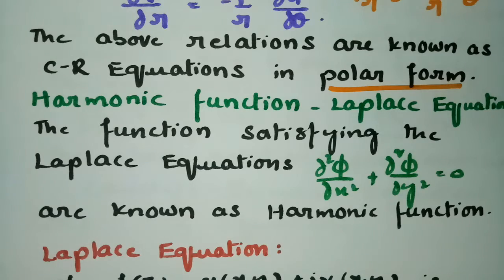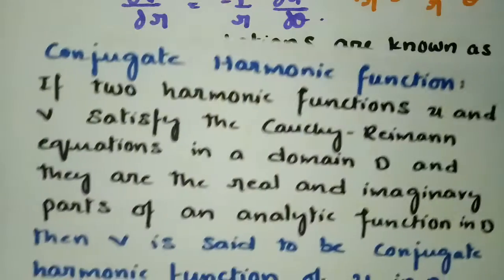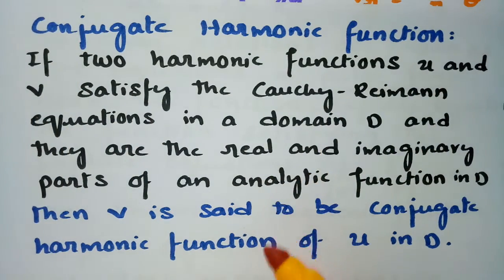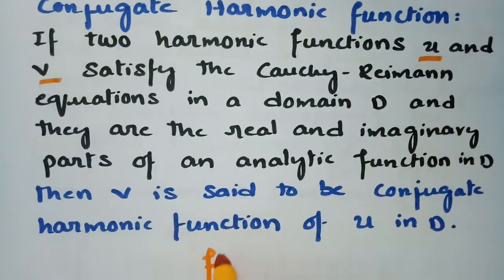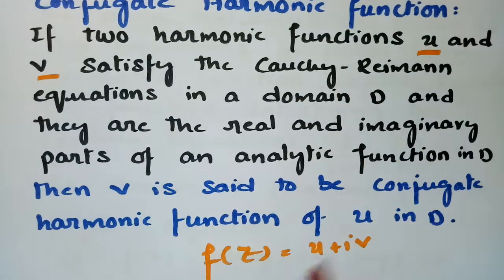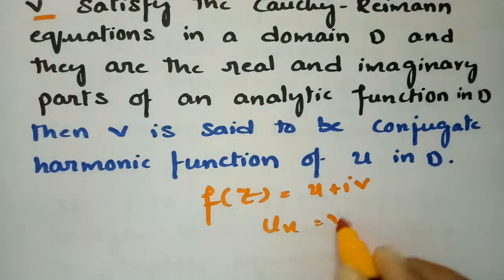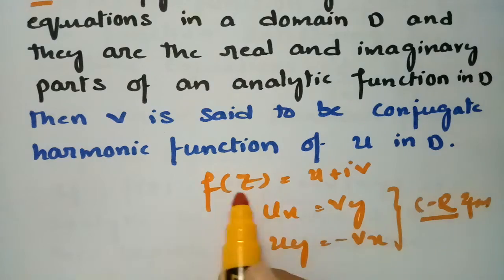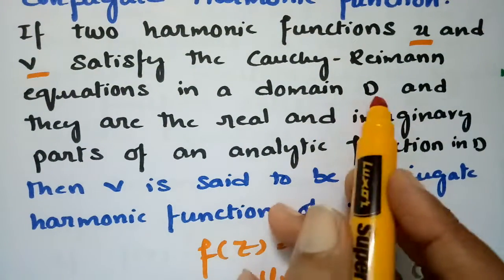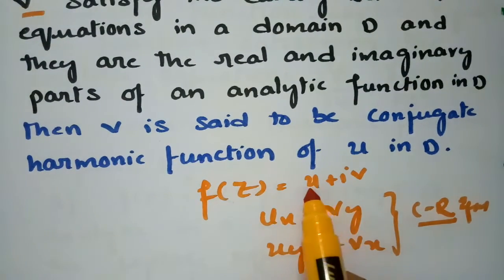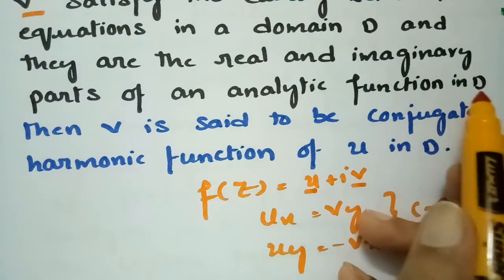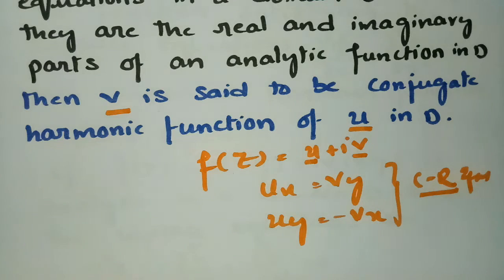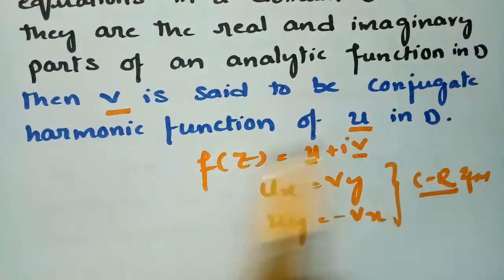There are many problems based on this. The next definition is conjugate harmonic function. If two harmonic functions u and v satisfy the CR equations — u_x = v_y and u_y = −v_x — in a domain D, and they are the real and imaginary parts of an analytic function in D, then v is said to be the conjugate harmonic function of u in D, and vice versa.